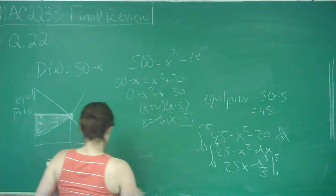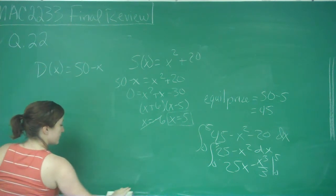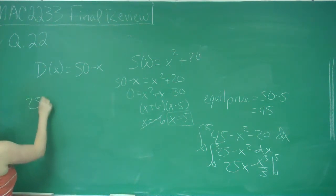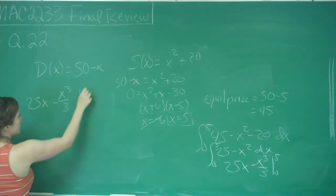I know this is kind of getting down here. I'll erase this lovely little graph. So I've got 25x minus x cubed over 3 from 0 to 5.